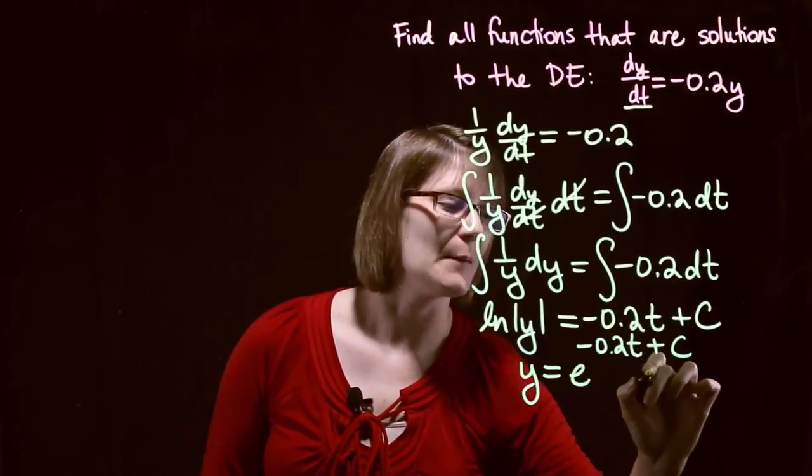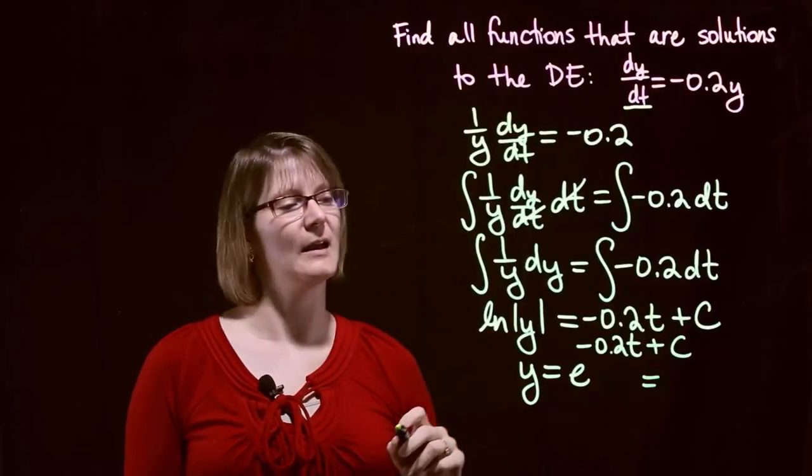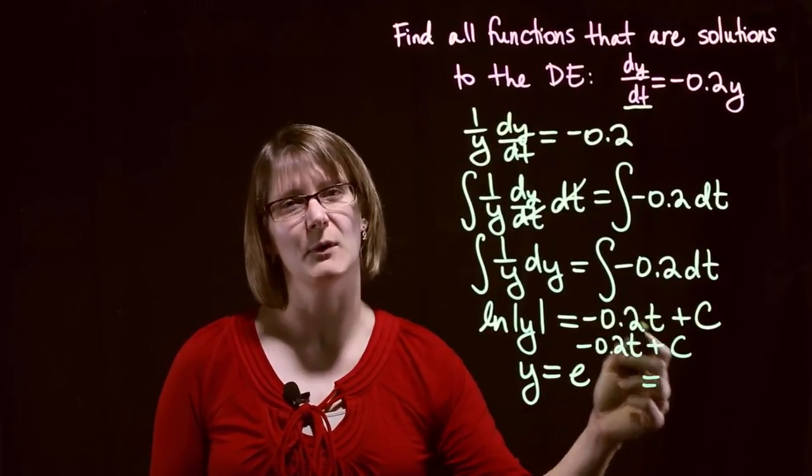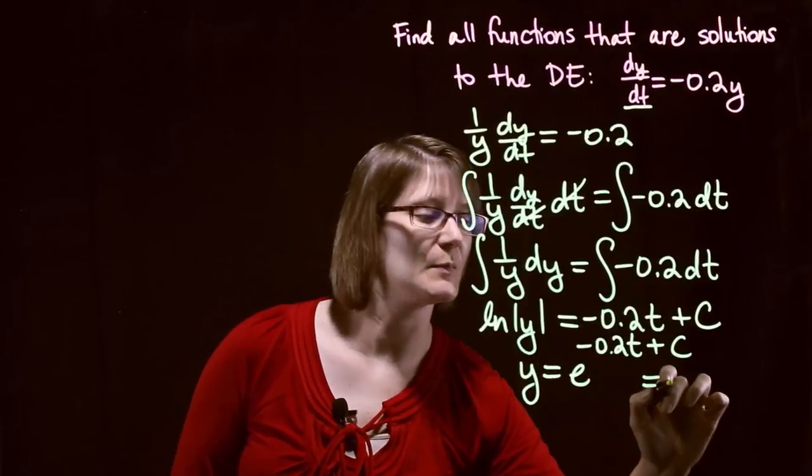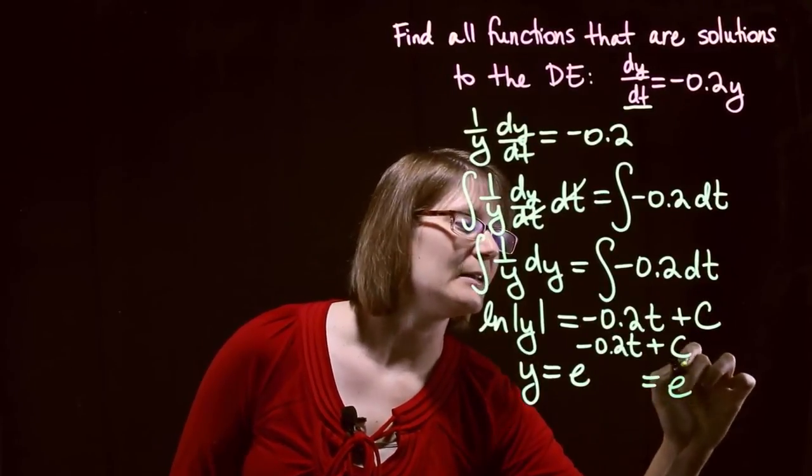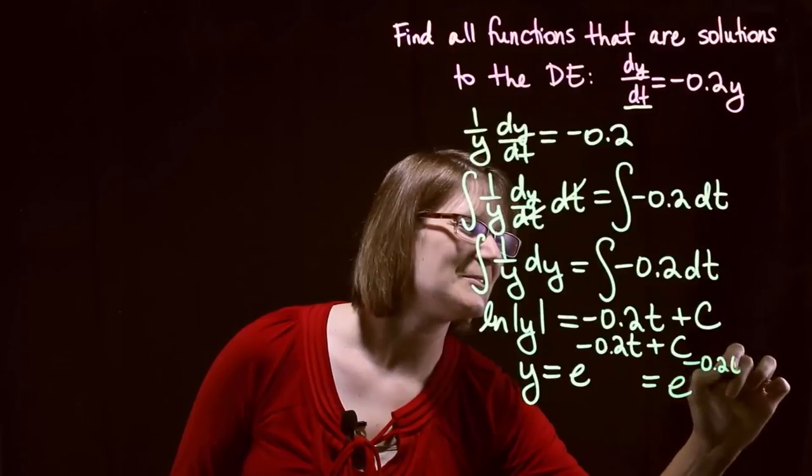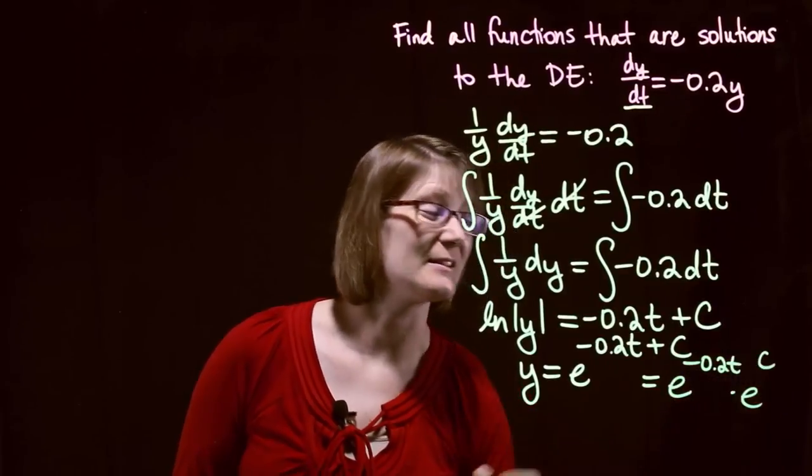So now we've got to remember some properties of exponents. Hopefully you remember going backwards if you add in your exponents, that means we were actually multiplying with our bases. So we've got e to the negative 0.2t times e to the c.